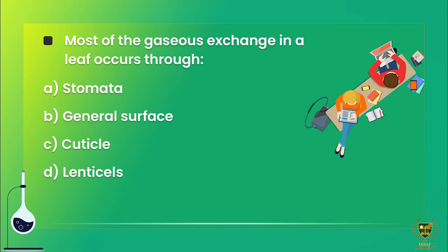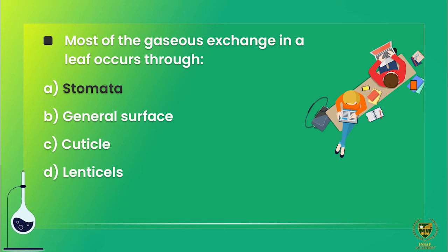Option B says general surface area — woh young roots mein hoti hai, so that is also not correct. The only remaining option is A — stomata. Aap ko bhi yaad aa gaya hoga ke leaf ke andar jo major structure hai jahan se gaseous exchange hoti hai woh stomata hai. So most of the gaseous exchange in a leaf occurs through stomata. Correct option is alpha.